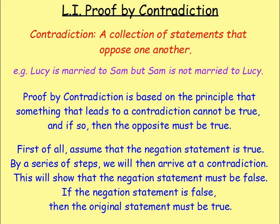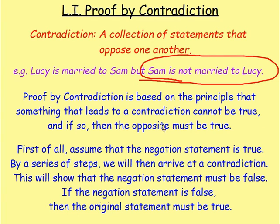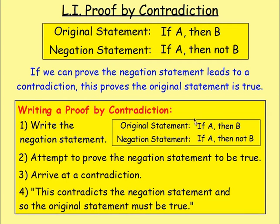We then looked at proof by contradiction. A contradiction is a collection of statements that oppose one another — for example, saying Lucy is married to Sam but Sam is not married to Lucy makes no sense. Proof by contradiction is based on the principle that something leading to a contradiction cannot be true. In maths, we assume the negation statement to be true, and by a series of steps arrive at a contradiction. That shows the negation statement is false, which means the original statement must be true.